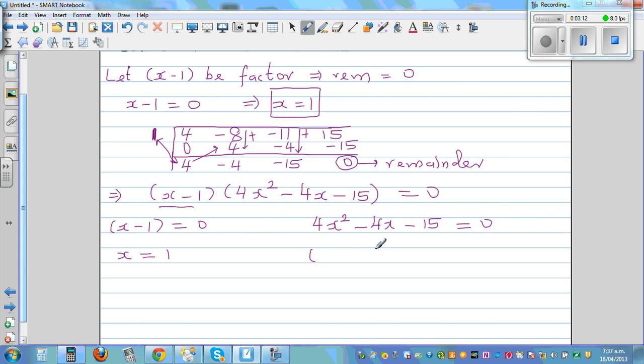So x is equal to 1. And here we can put this in two brackets. If it's 4x squared, you can only write 2x and 2x. So why did I write 2x? Because 2x times 2x gives me 4x squared.